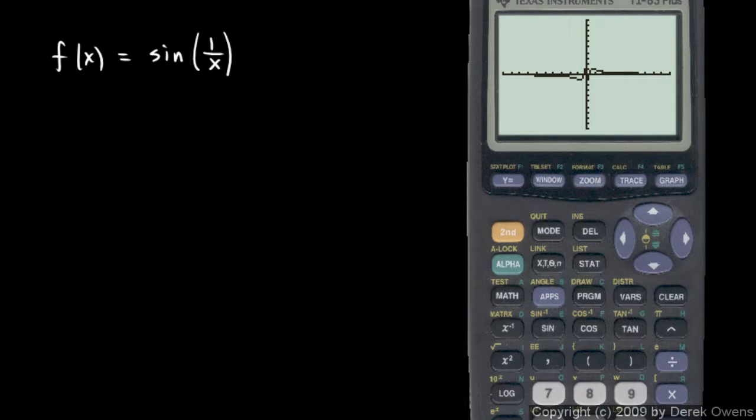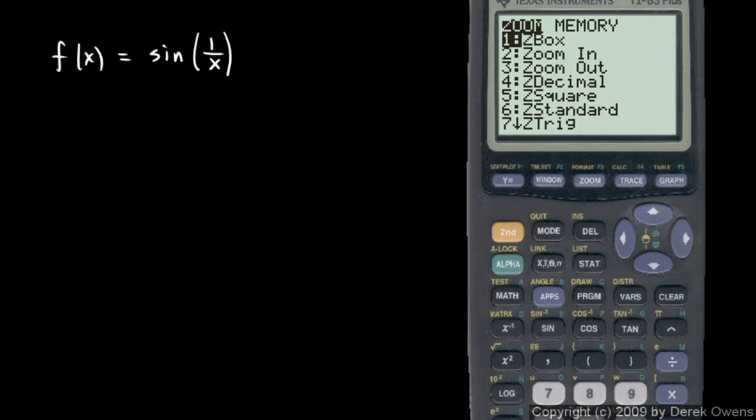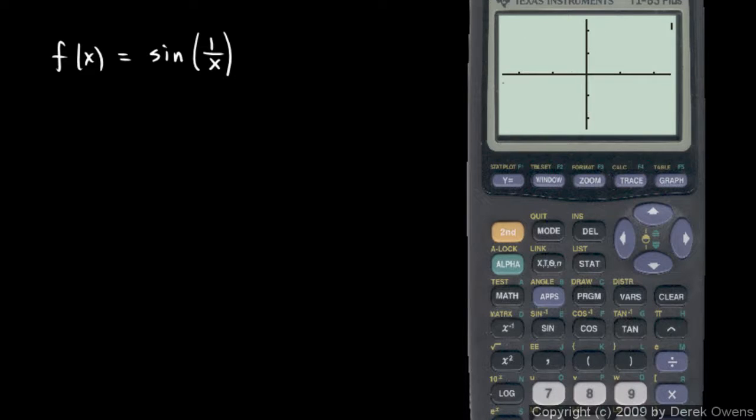But clearly something's going on near the origin, so let's zoom in. I'll pick option 2, zoom in, and press enter. Let's think about the limit of this function near zero. It looks like the graph is heading towards a value of 0, but let's change our scale a little bit.